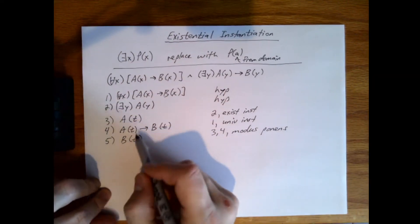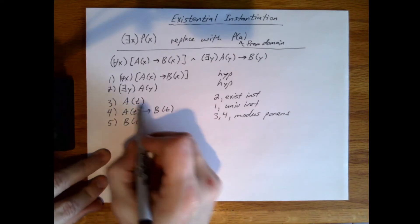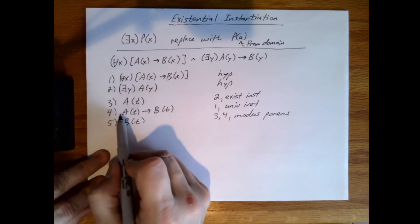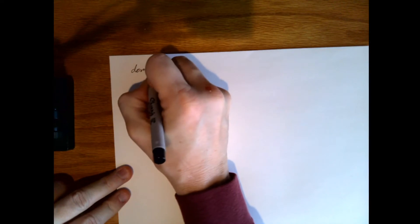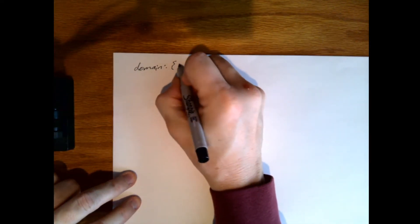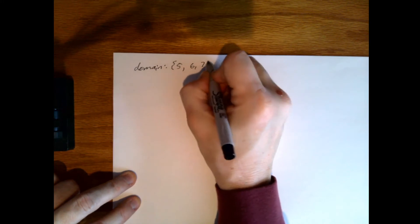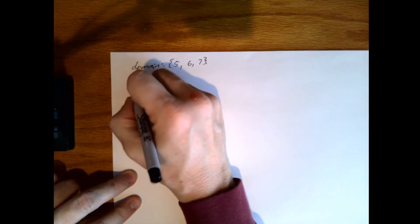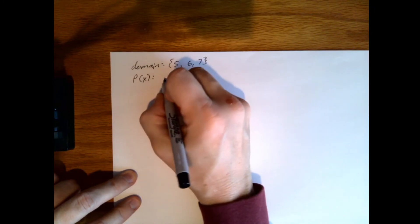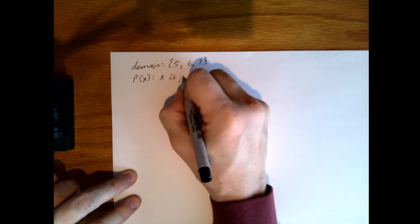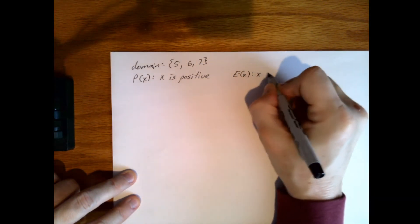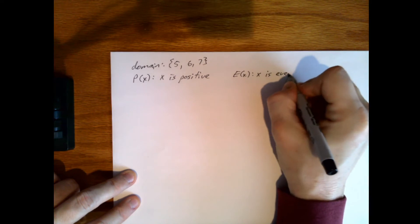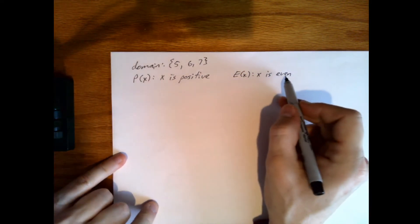So let's look at an example and see why I did this in order. If I were to swap lines three and four, it would be incorrect. So let's say we have this. Let's say our domain is the numbers five, six, and seven.